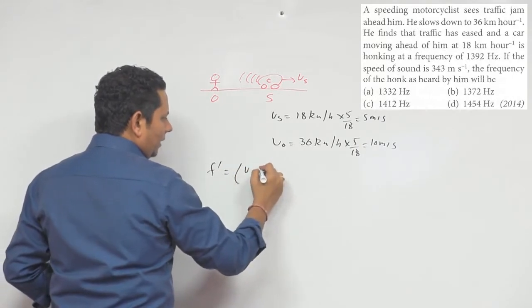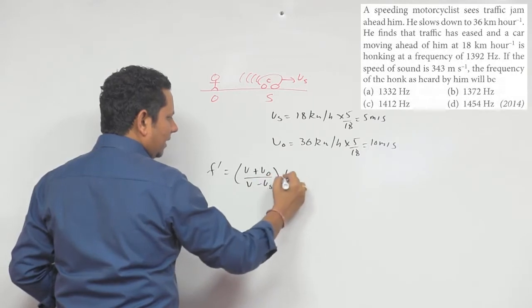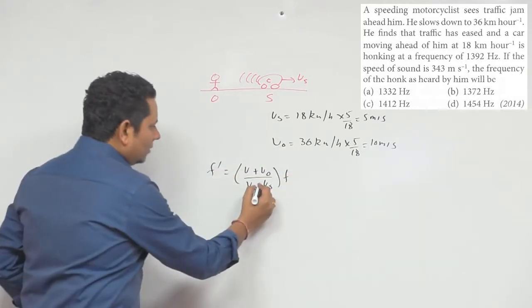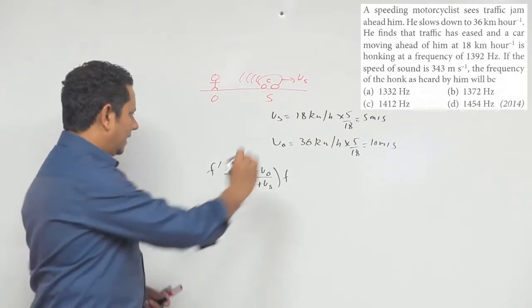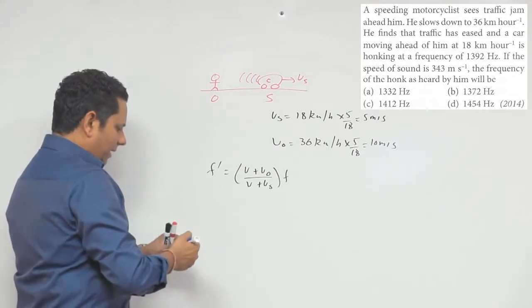In this case, since the source is moving away, vs will have a plus sign here, and the numerator also has plus. So by putting in the data, we'll get our final answer.